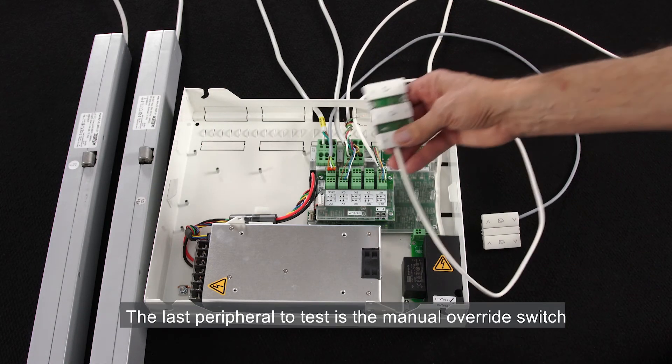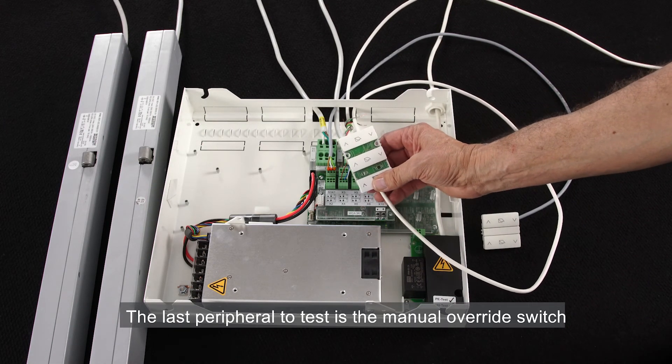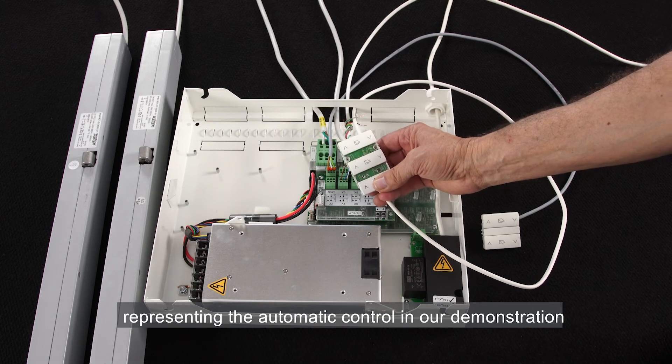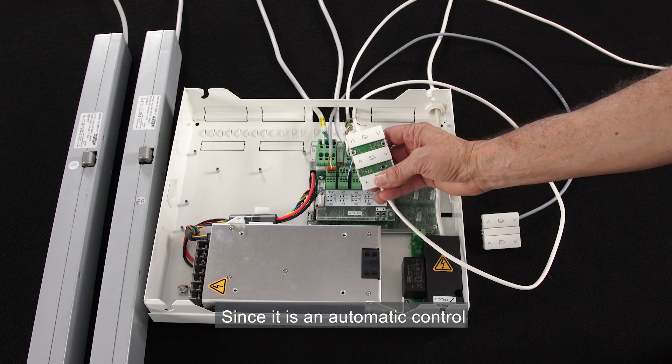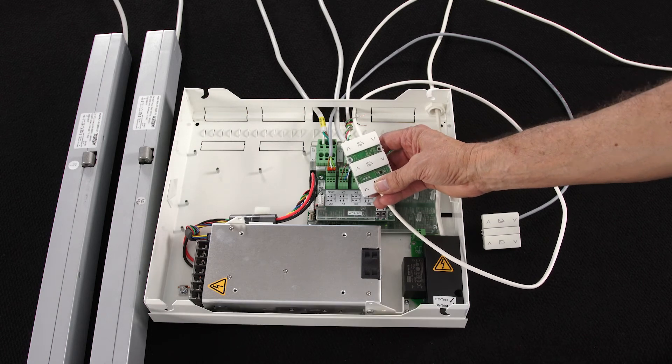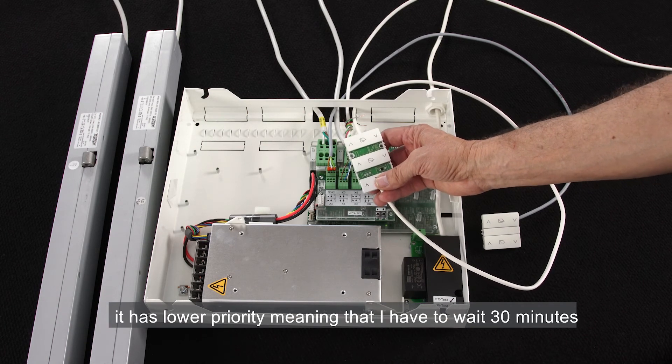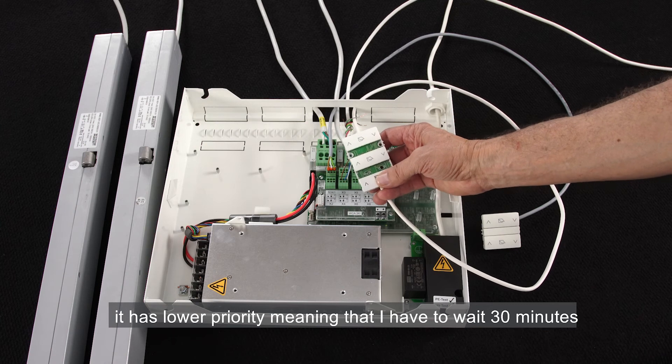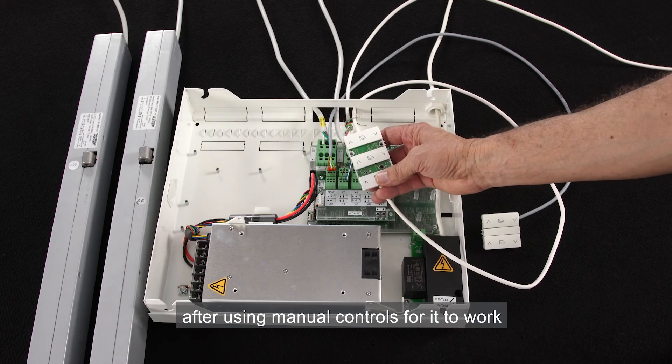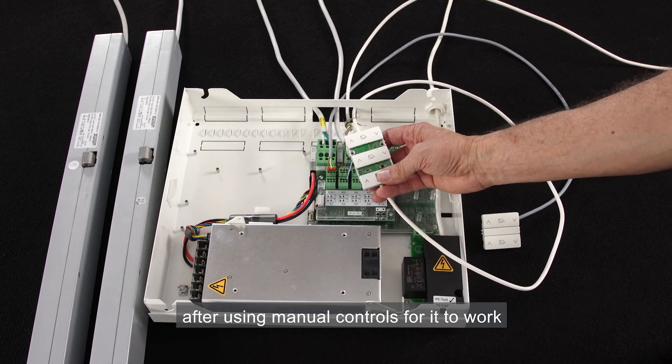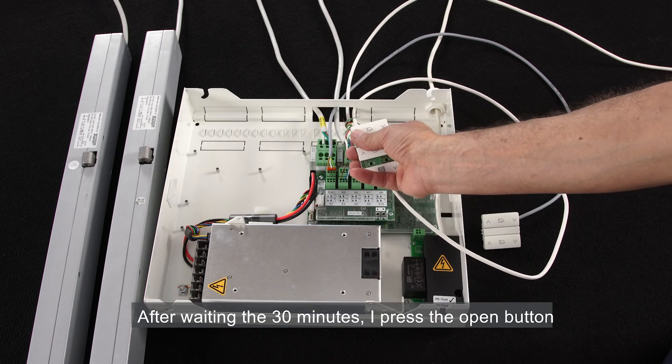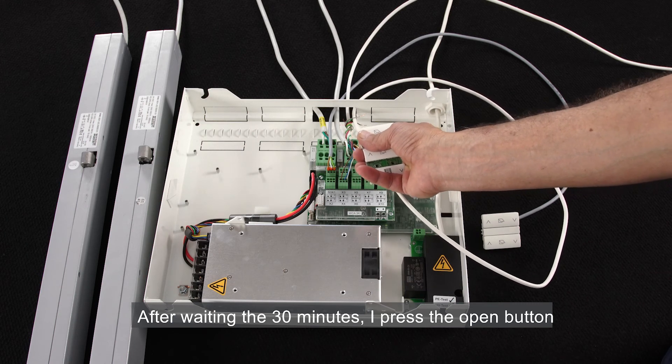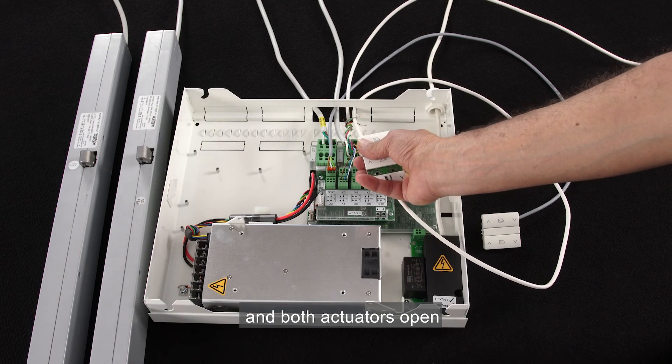The last peripheral to test is the manual override switch representing the automatic control in our demonstration. Since it is an automatic control, it has lower priority, meaning that I have to wait 30 minutes after using manual controls for it to work. After waiting the 30 minutes, I press the open button and both actuators open.